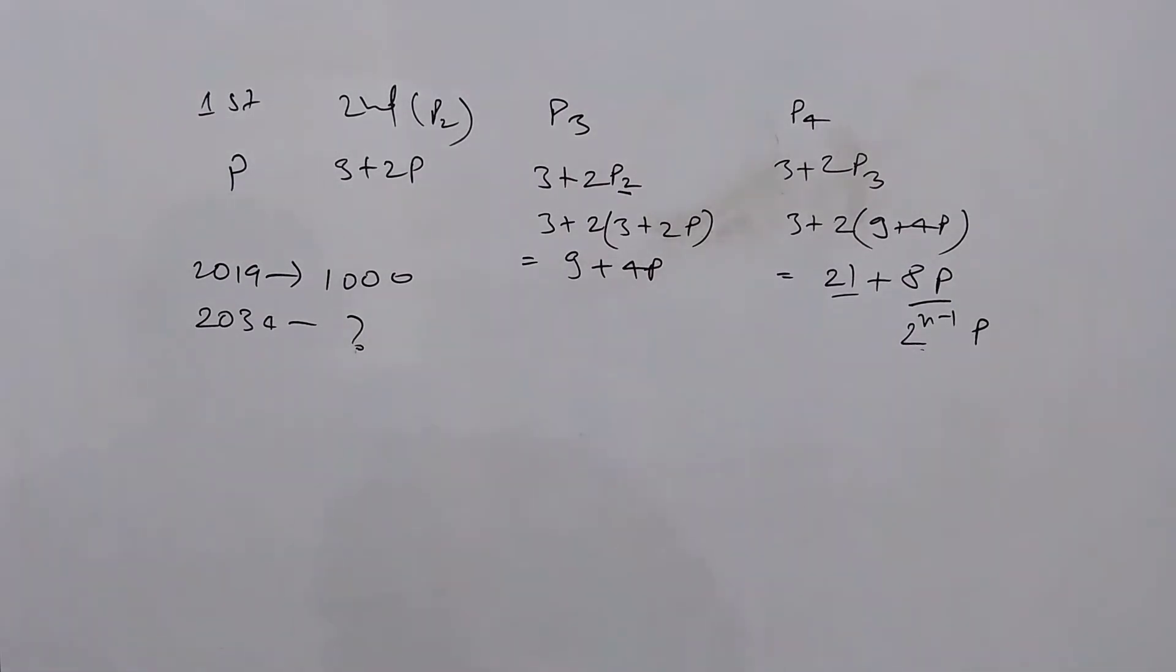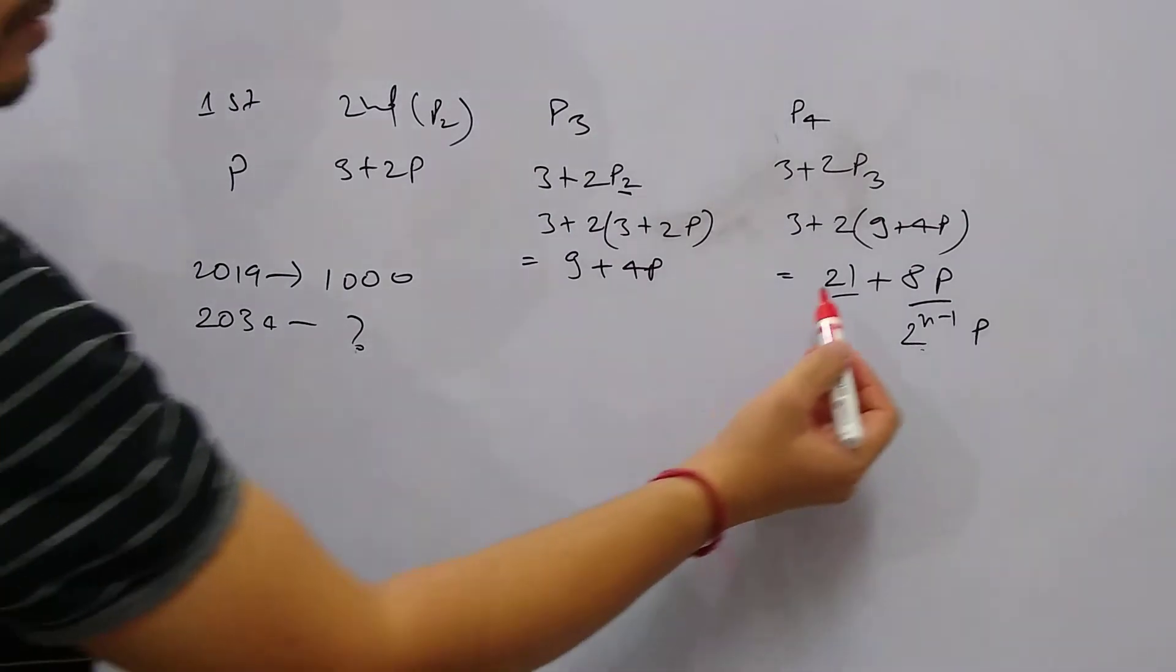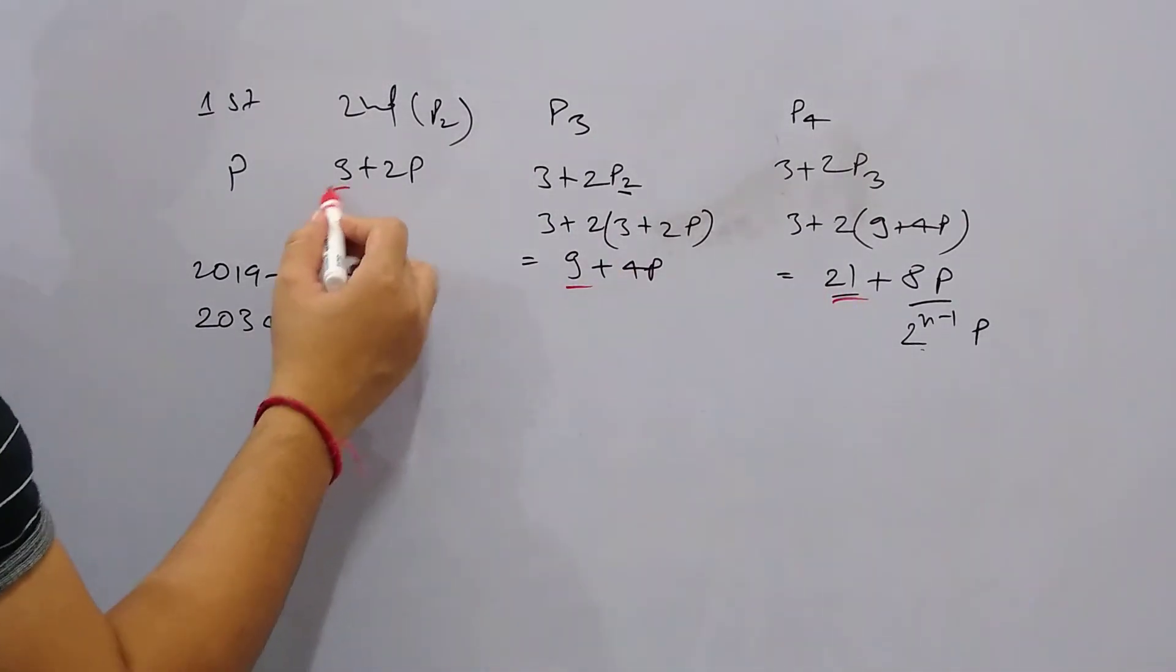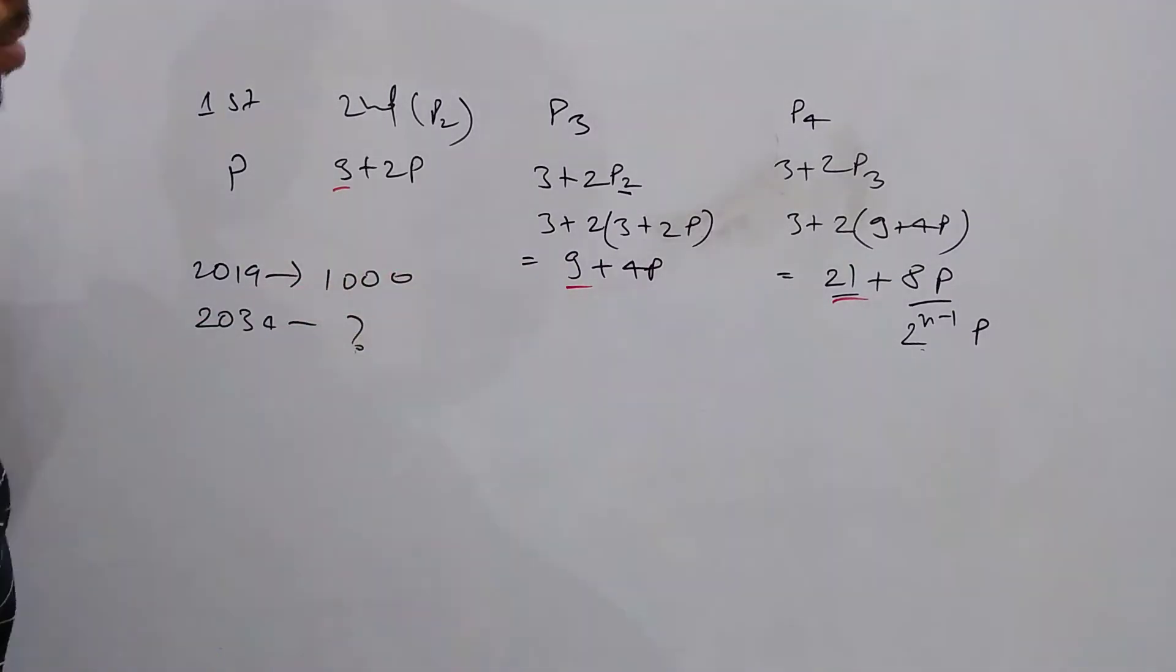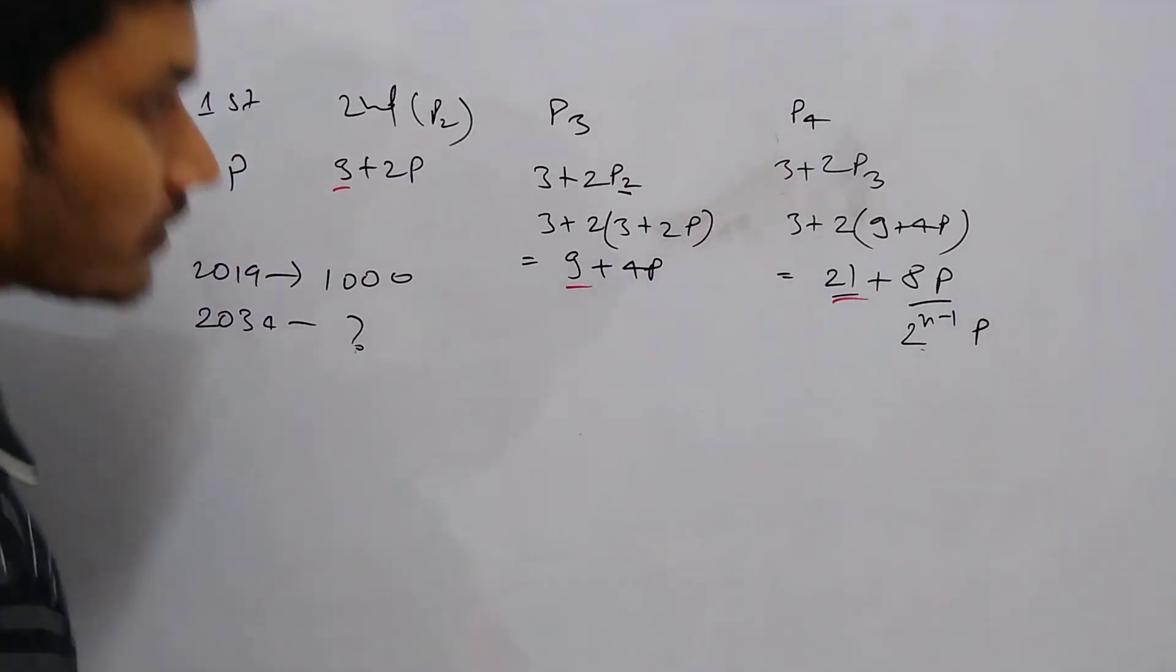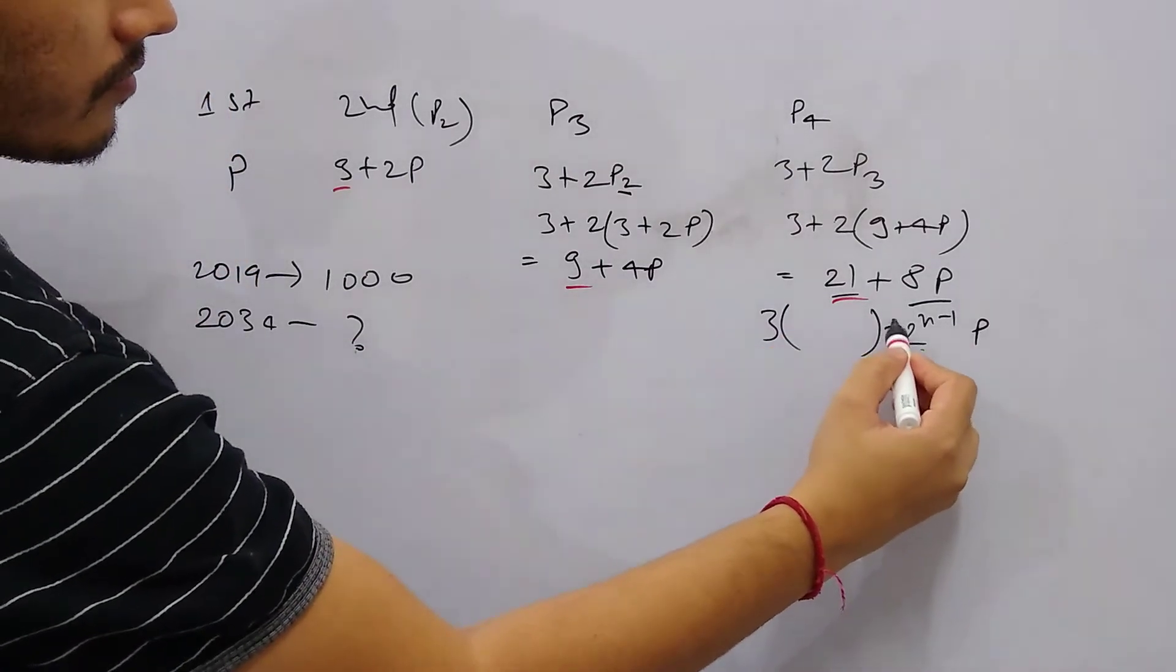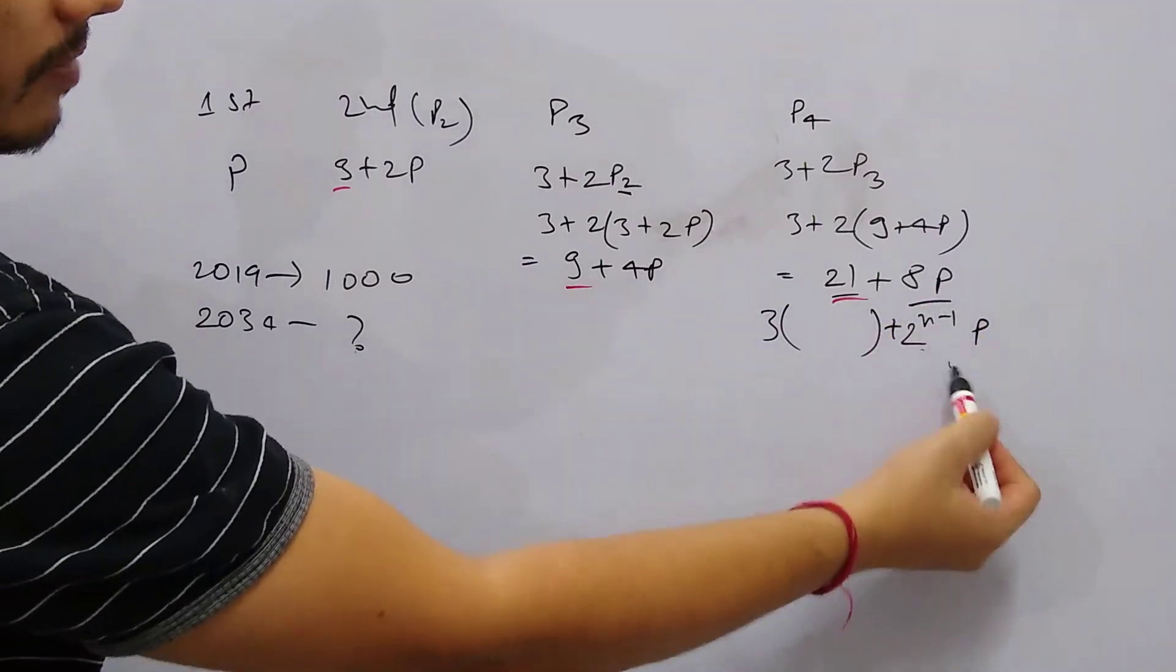And 21, if you see, is a multiple of 3. 9 is also a multiple of 3. 3 is also a multiple of 3. The pattern is still not completely clear, but at least this is a multiple of 3. So we can say it's 3 times something, plus the 8p we have written.